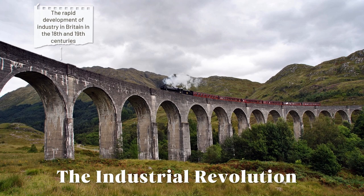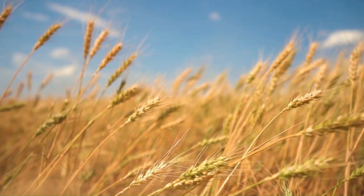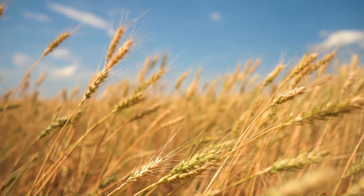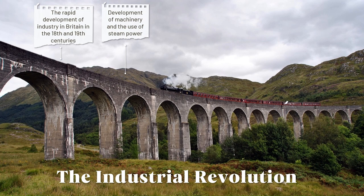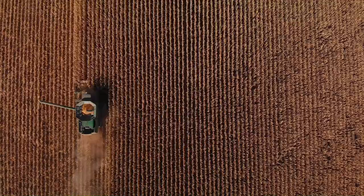The Industrial Revolution. Before the 18th century, agriculture was the biggest source of employment in Britain. There were many cottage industries, where people worked from home to produce goods such as cloth and lace. The Industrial Revolution was the rapid development of industry in Britain in the 18th and 19th centuries. Britain was the first country to industrialize on a large scale. It happened because of the development of machinery and the use of steam power. Agriculture and the manufacturing of goods became mechanized, making things more efficient and increasing production. Coal and other raw materials were needed to power the new factories.